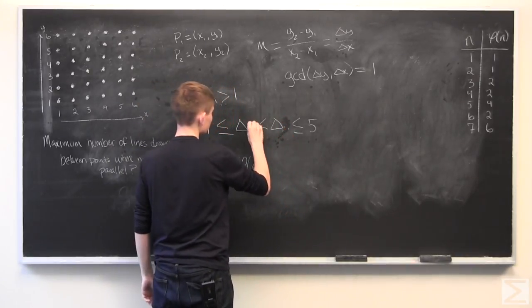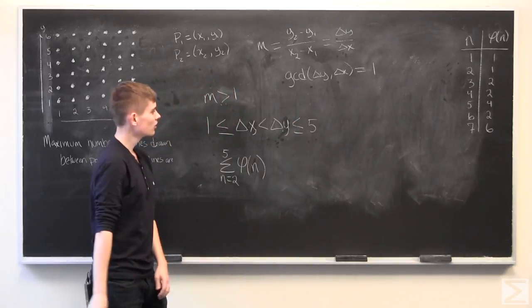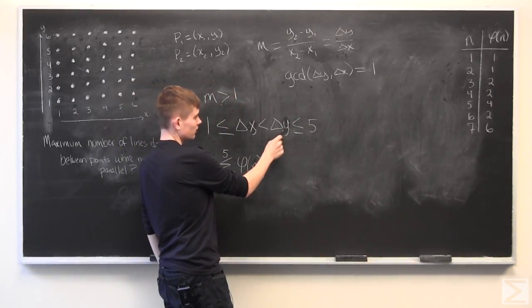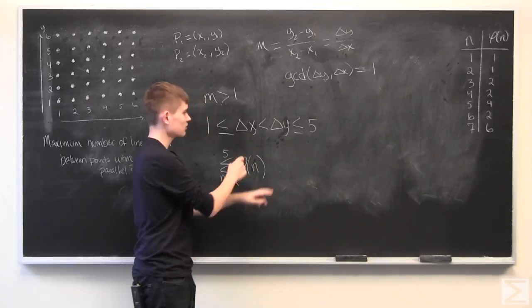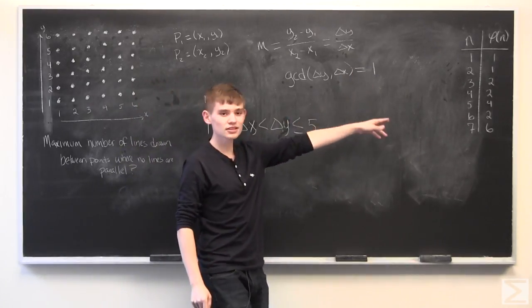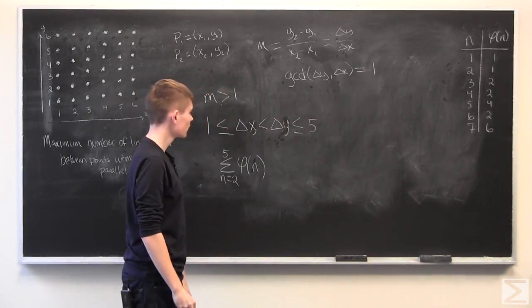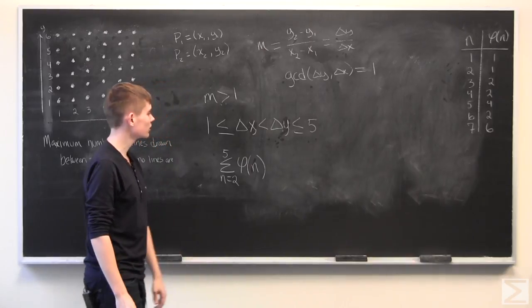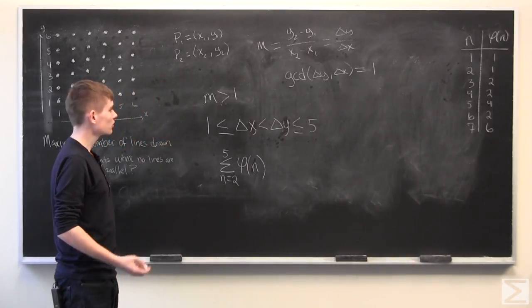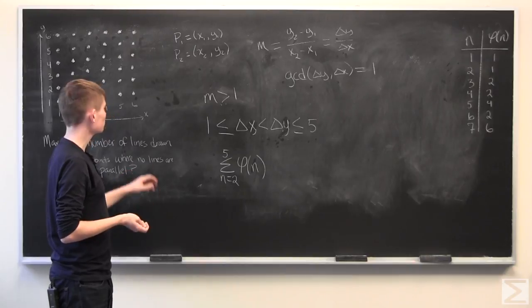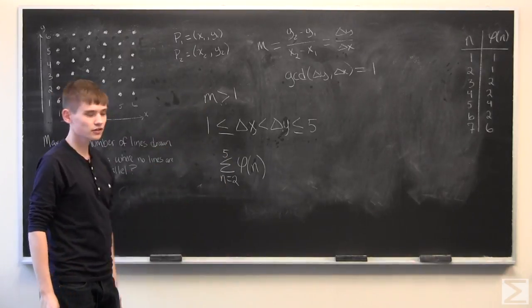So, if we rearrange this, we get roughly the same thing. What we have to do is we have to find the number of delta x's that work for each delta y. That's the same thing as using the Totient function. And so, it should be clear that there is the same number of unique slopes less than 1 as there are greater than 1.